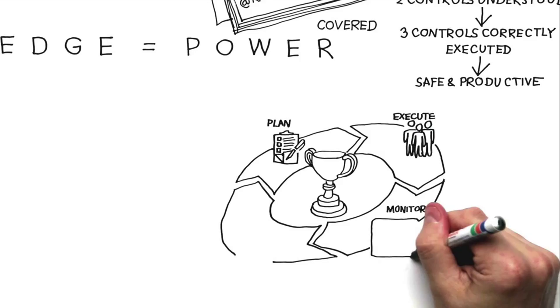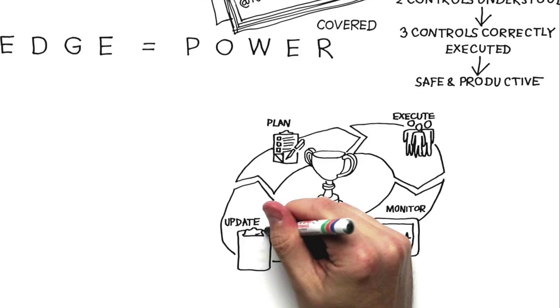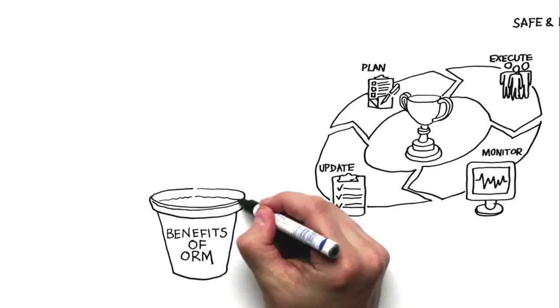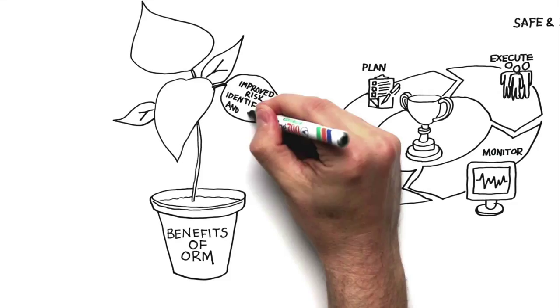To sum up, operational risk management enables business excellence through three things. Improved risk identification and control, better prioritization and resource allocation, enhanced operational decision making and performance.